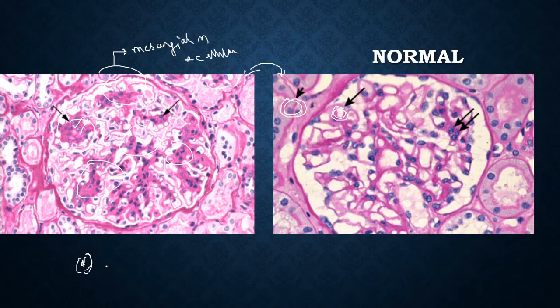This is the mesangio-proliferative glomerular finding which can be seen in many conditions, for example IgA nephropathy, lupus, and others. That's all about these two images.